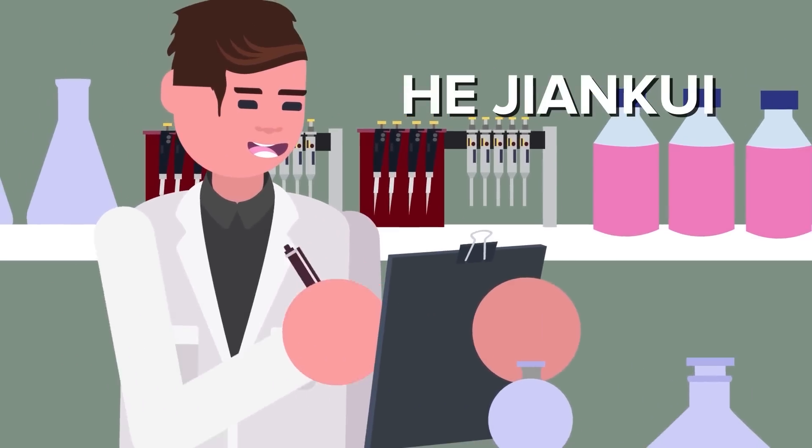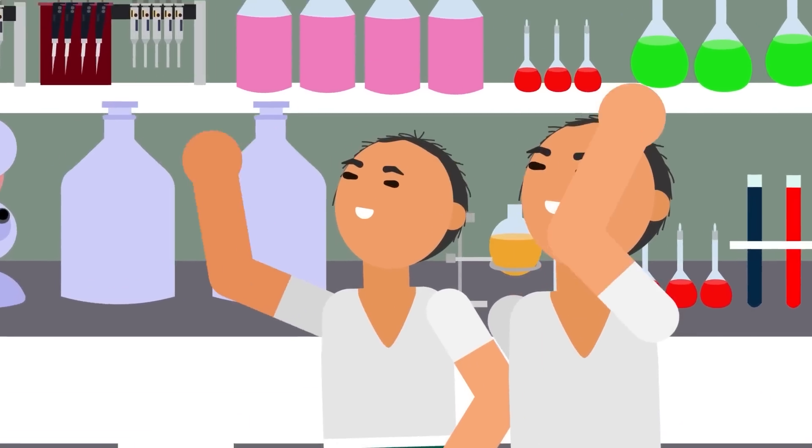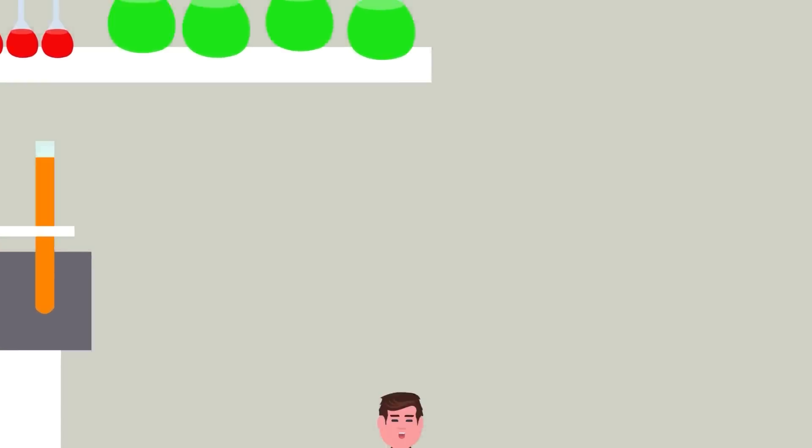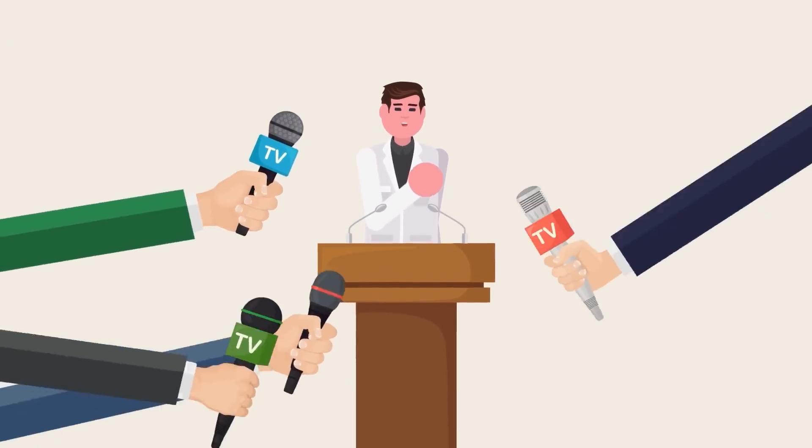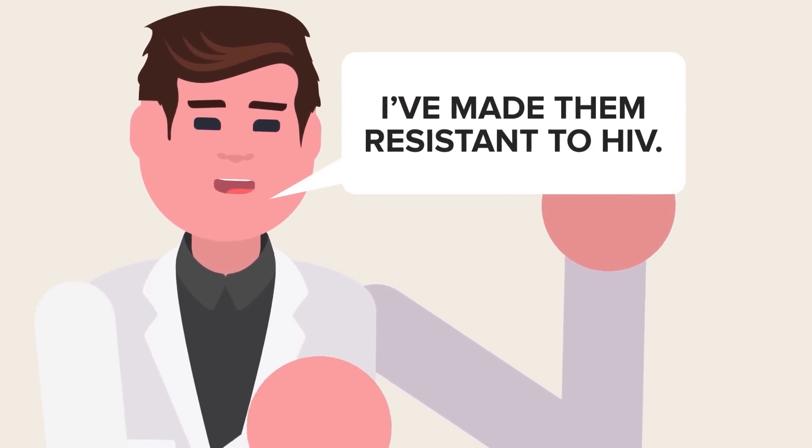a Chinese biophysicist named He Jiankui modified the DNA of twins before they were born to make them resistant to HIV using CRISPR. This was done without notifying the government or any other science organizations, putting Jiankui's experiment into the realm of biohacking.